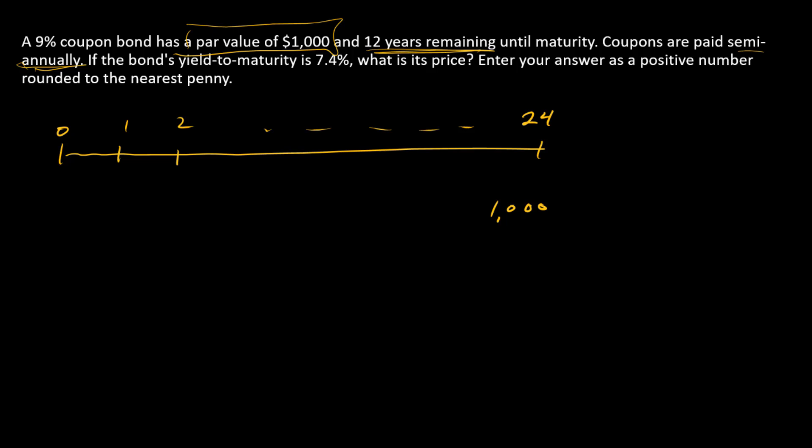So what are the coupon payments? Let's go to the coupon rate. We have 9% coupons, and so that just means 9% of the par value is paid each year, and so that's $90. And since coupons are paid semi-annually, we're going to take this 90 and split it into two pieces. So each semi-annual coupon is $45, so we can put our 45s on the timeline as well.